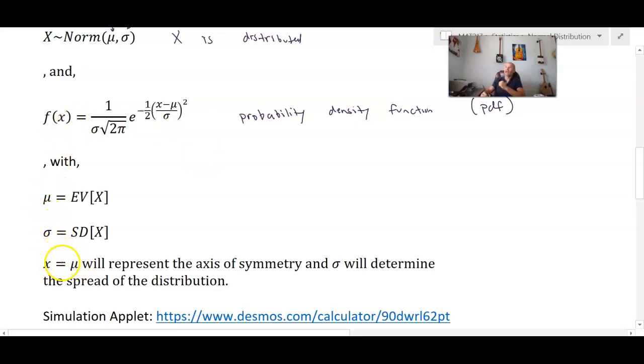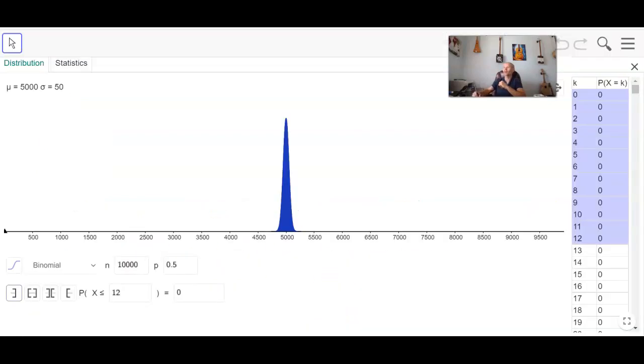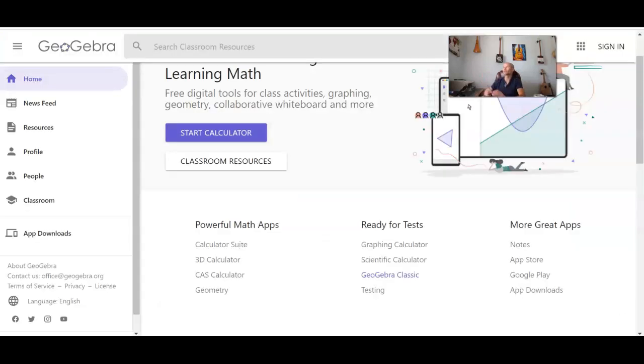What will be interesting is that x equals mu will represent the axis of symmetry and sigma will determine the spread of the distribution. So let's take a look at a simulation applet with a binomial with n equals 10,000. You can see that you can't even see the bars in that particular one. Now here is the graph of this normal distribution.